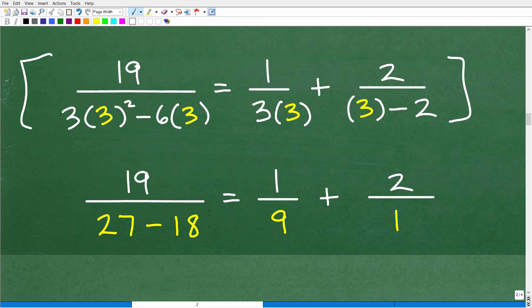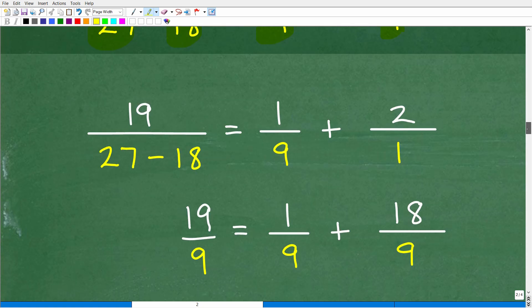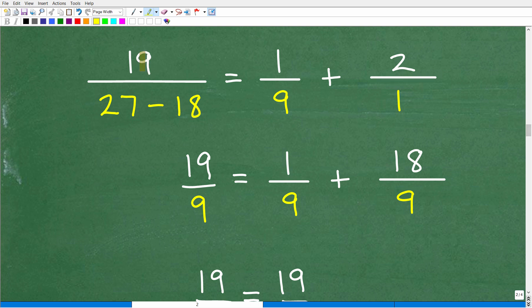So you can see how I plugged in 3 everywhere where there was a C. So let's go ahead and simplify that arithmetic right now. All right, so we got 19 over 3 squared is what? That's 9. 9 times 3 is 27. And then 6 times 3, of course, is 18. I'll deal with the rest of this in a second. So 1 over 3 times 3, of course, is 9. 2 over 3 minus 2 is 1. Okay, so let's continue to check to see if this is correct. Let's pick up the problem right here.